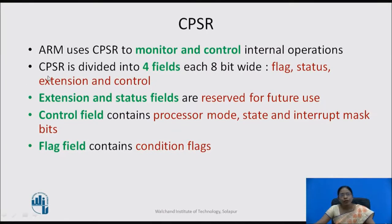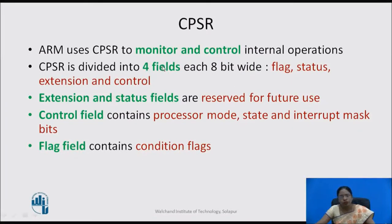CPSR is divided into four fields, each field is 8 bits wide. The first field is the flag field, the second is the status field, the third is the extension field, and lastly the control field. These are the four fields in CPSR.